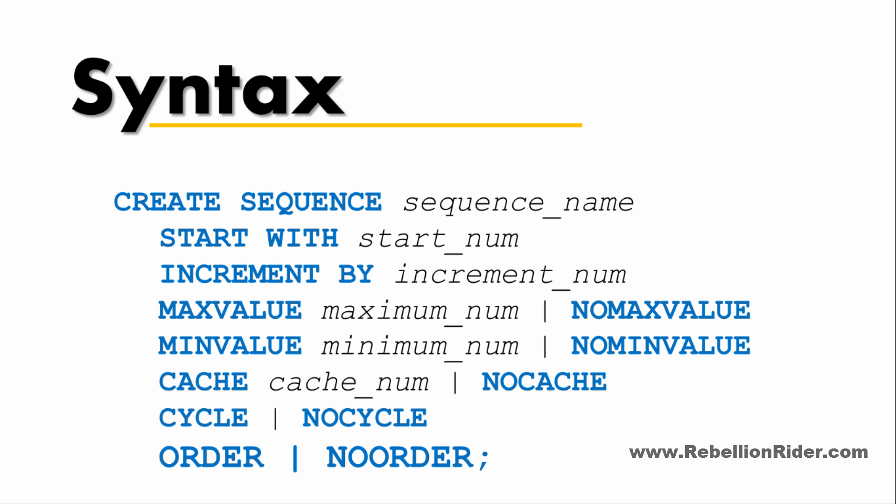At last we have two more flags: ORDER and NOORDER. The ORDER flag guarantees that sequence numbers are generated in order of request. This clause is useful if you are using the sequence number as a timestamp. Guaranteeing order is usually not important for sequences used to generate primary keys. Set the flag to NOORDER if you do not want to guarantee that sequence numbers are generated in order of request. NOORDER is the default flag if you omit either of them.